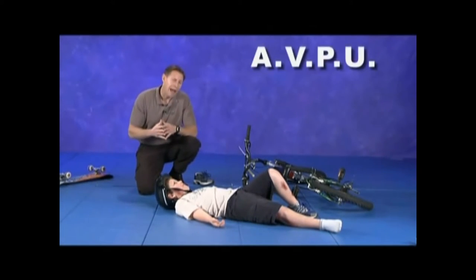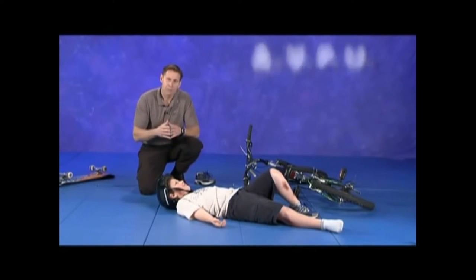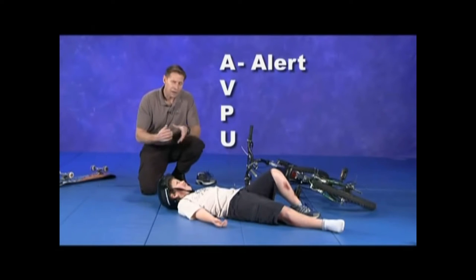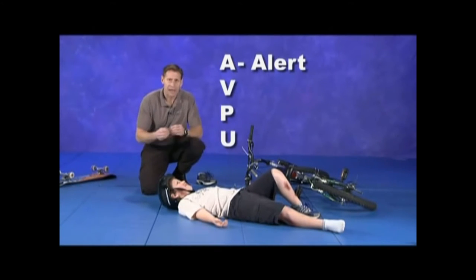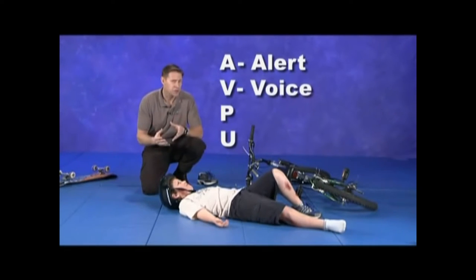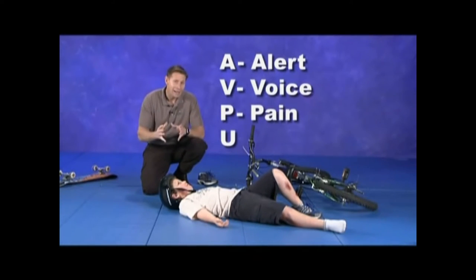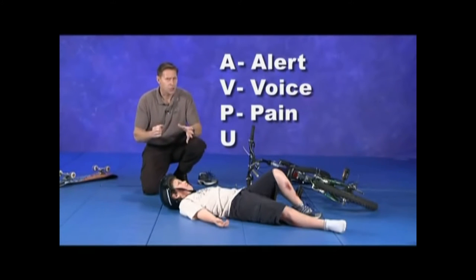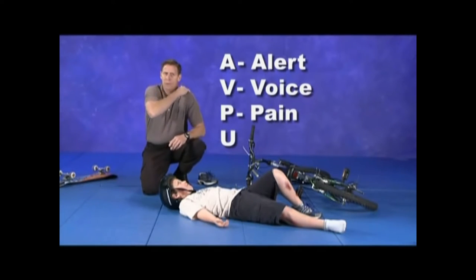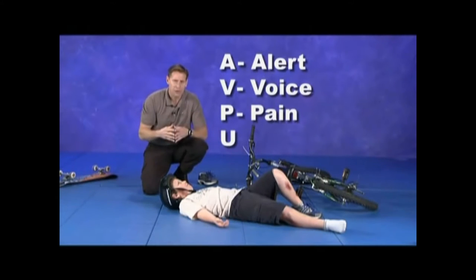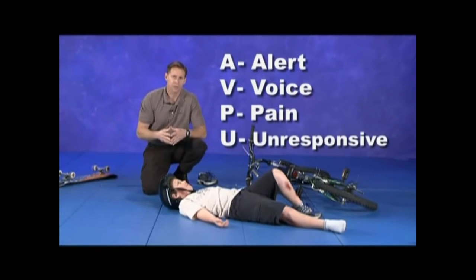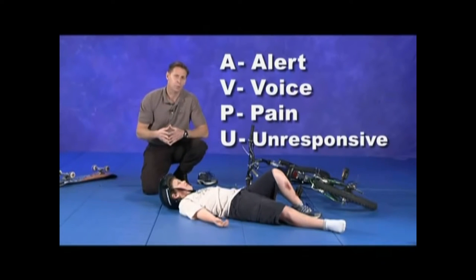We look at something called AVPOO. When we walk up to somebody, the A stands for: are they alert? If I introduce myself and they talk to me, they're alert. V is: do they have response to voice? Maybe they don't acknowledge me, but when I talk they can move around. P is response to pain — they may be unconscious, but when I rub them in the sternum or pinch them, they move. And U is unresponsive. If they're unresponsive, we need to do a quick assessment and find out what's going on with them.